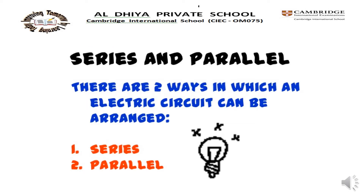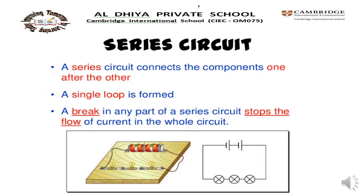There are two ways in which an electric circuit can be arranged: series and parallel. In a series circuit, the components are connected one after the other and a single loop is formed. A break in any part of a series circuit stops the flow of current in the whole circuit. Look at the picture — this is the arrangement of a series circuit.